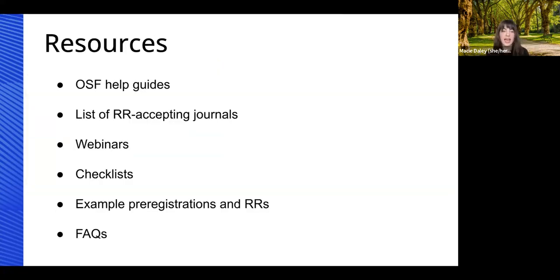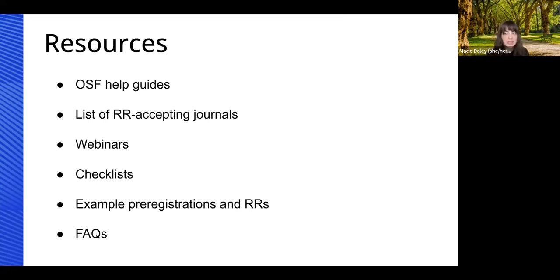People will be receiving a list of resources to help them successfully create either a pre-registration or registered report. COS provides a pretty robust set of resources for both, including help guides that step-by-step walk you through starting a pre-registration, a list of all journals that accept registered reports, a curated list of journals specific to the kind of data GFS presents, pre-recorded webinars, checklists, examples of both pre-registration and registered reports, FAQs for both, and more.